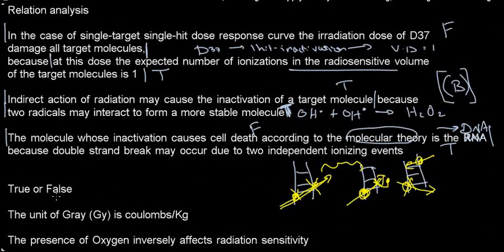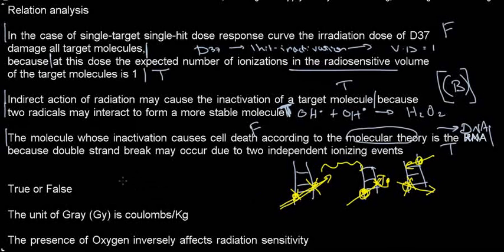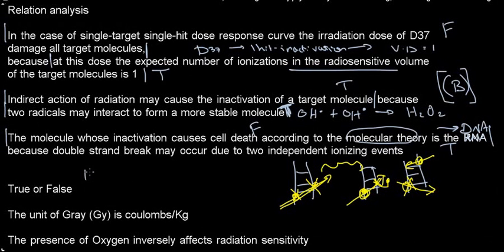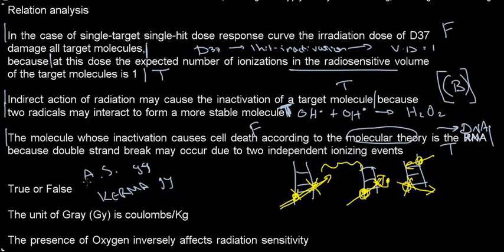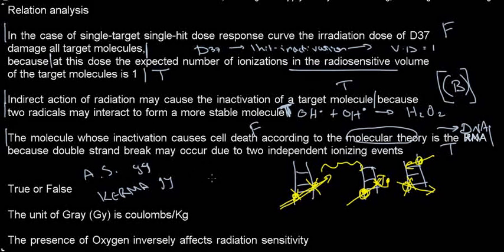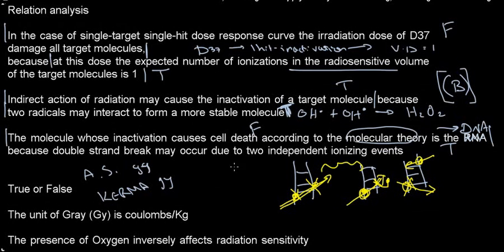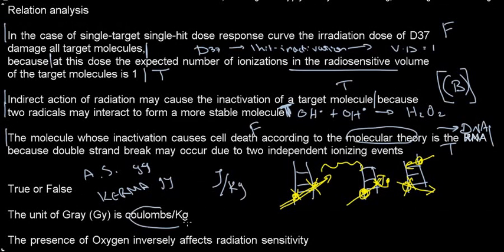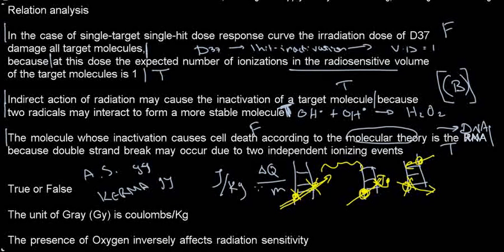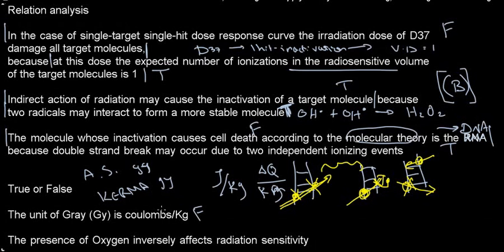True or false: the unit of gray is coulombs per kilogram. We need to know that absorbed dose and kerma are calculated in gray, and gray represents joules per kilogram — energy released in the material. Coulombs per kilogram is the unit for exposure, which measures charge per unit mass. So this would be false.